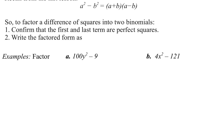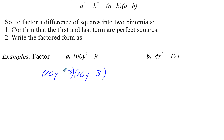So first, 100y² - 9. Are these two numbers perfect squares? Yes, they are. The square root of 100y² is 10y, and the square root of 9 is 3. So we write that twice: (10y + 3)(10y - 3) — one of each sign, one plus and one minus. If we were to use FOIL on this, we would get right back to what we started with, since the outer and inner terms drop because they have opposite signs.